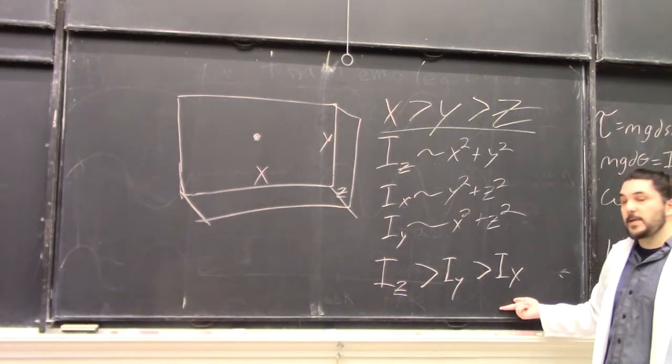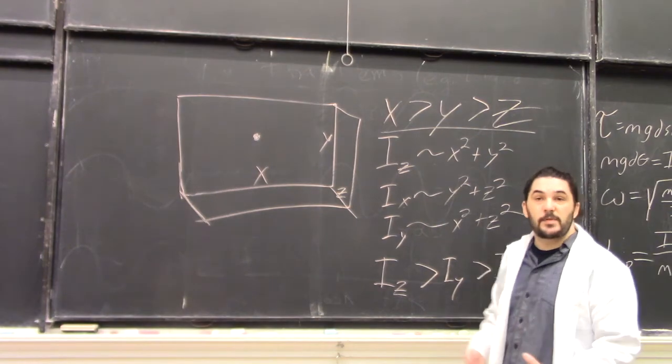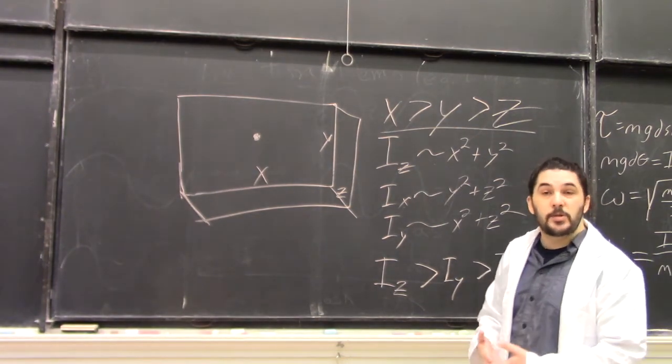I_z and I_x, being the largest and smallest principal moments of inertia, are stable for rotation.